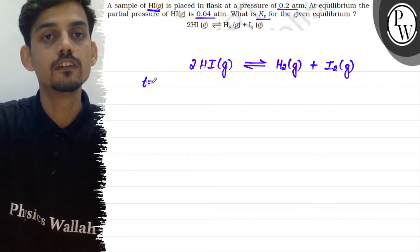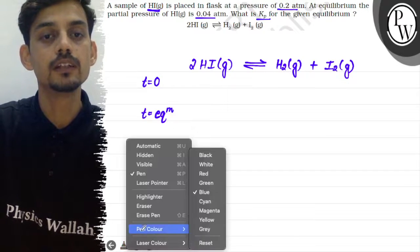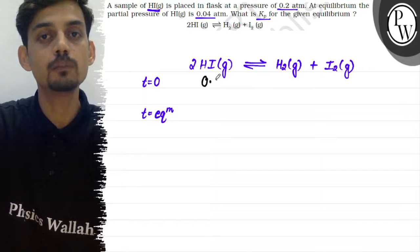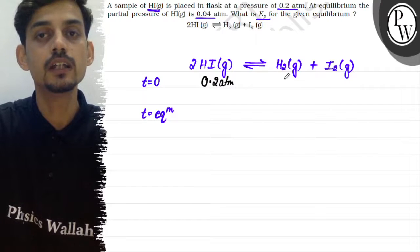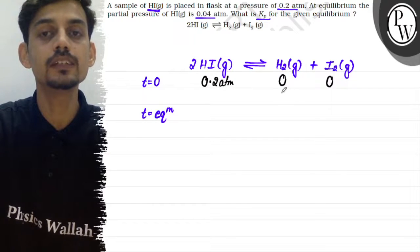T equals 0 and T equals equilibrium. Initial and equilibrium time information in tabular form. Initially we are given that the partial pressure of HI is 0.2 atm, and H2 and I2 partial pressures are not given, so we can assume them to be 0.